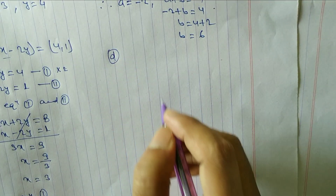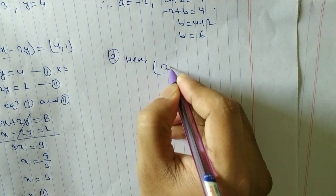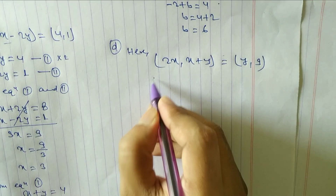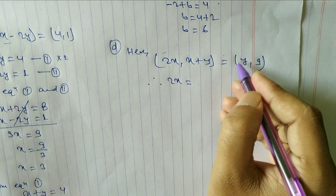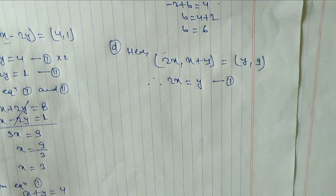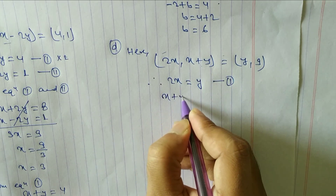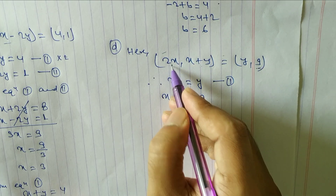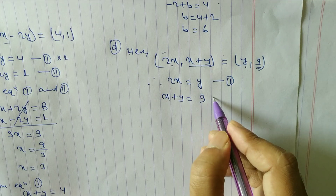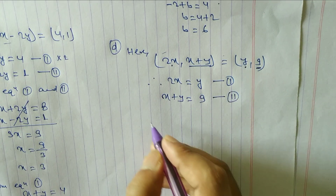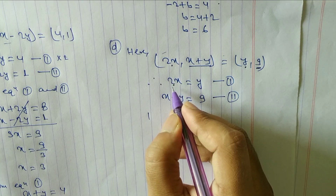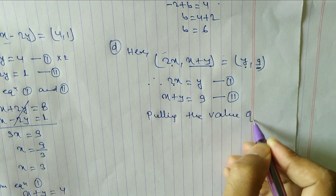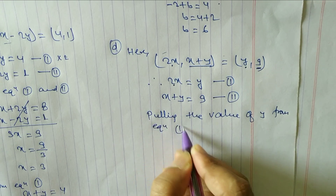Look at question number 1d: (2x, x+y) = (y, 9). Comparing x-components: 2x = y — equation 1. Comparing y-components: x + y = 9 — equation 2. We have to solve these two equations to find x and y. From equation 1, y = 2x.